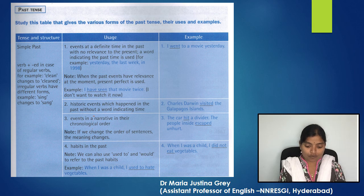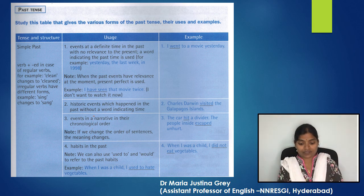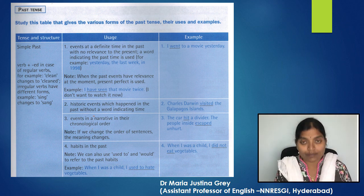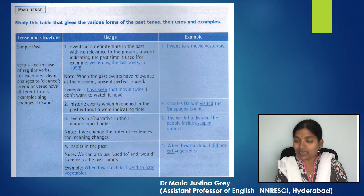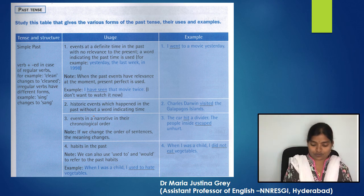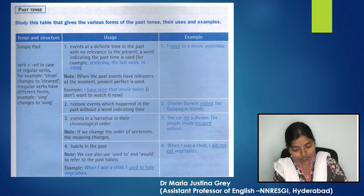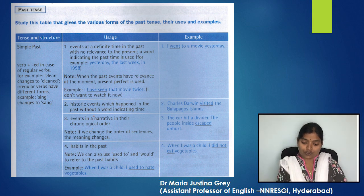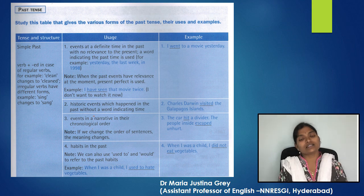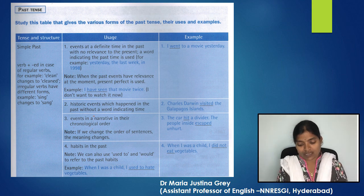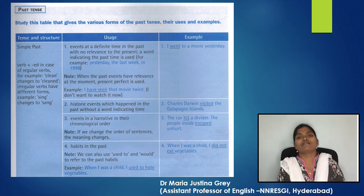Another use of simple past is to talk about habits in the past. For example, 'When I was a child, I did not eat vegetables.' Note: we can also use 'used to' and 'would' to refer to past habits. For example, 'When I was a child, I used to hate vegetables.'